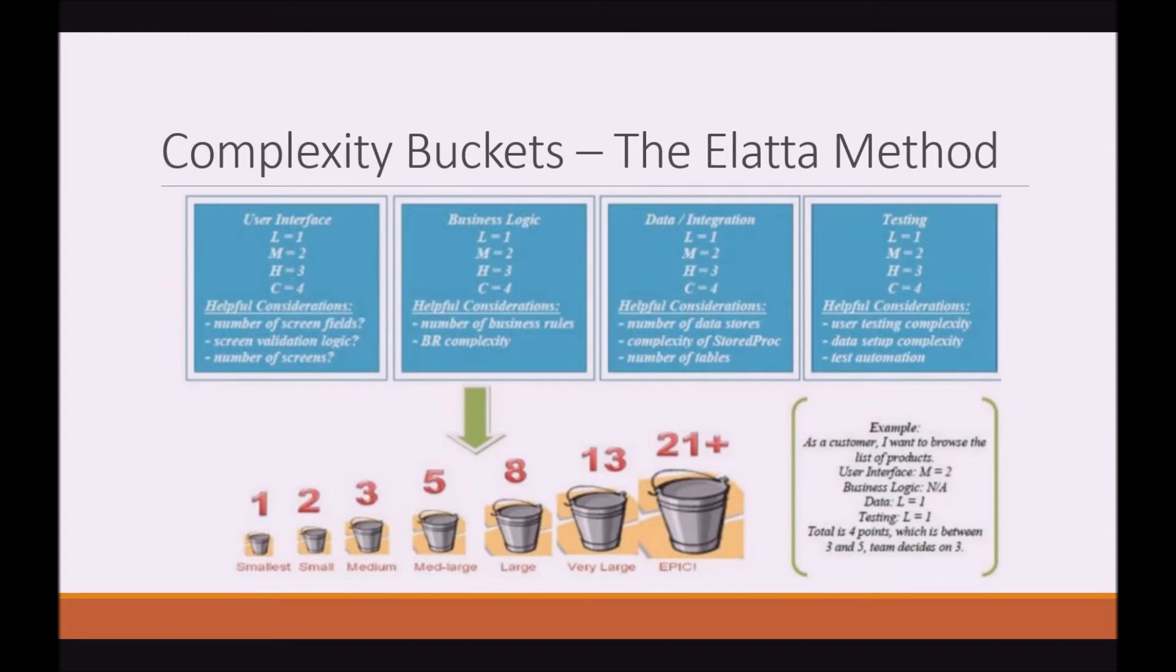Let's take a look at the complexity buckets method. You can see there's four blue boxes representing four separate categories. In the bottom, there's various bucket sizes: one, two, three, etc. And in the bottom right, there's an example. So, let's run through this example.